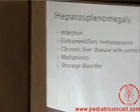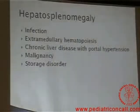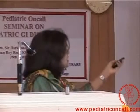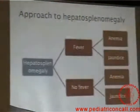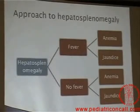Now we talk about hepatosplenomegaly — both liver and spleen enlarged together. When will both enlarge together? If there is infection, anemia causing extramedullary hematopoiesis, chronic liver disease with portal hypertension, or malignancy. Infection would present as fever; extramedullary hematopoiesis as anemia; chronic liver as jaundice. To approach hepatosplenomegaly, look for fever or no fever. If there is fever, look for anemia and jaundice. This is the chart we need to follow. The key features to look for are fever, anemia, and jaundice.